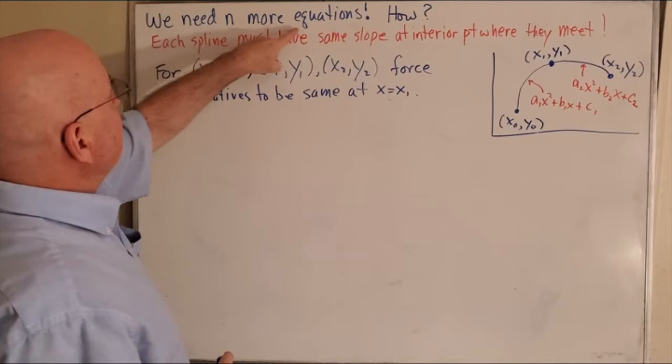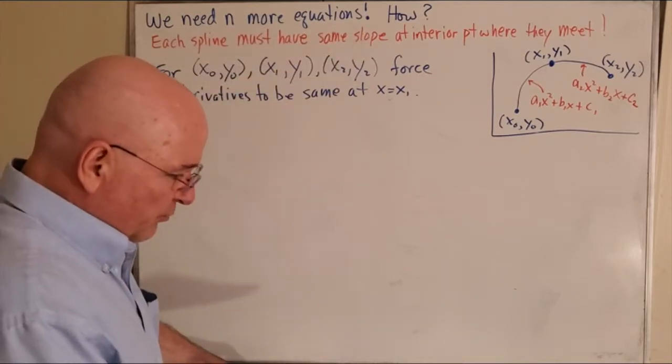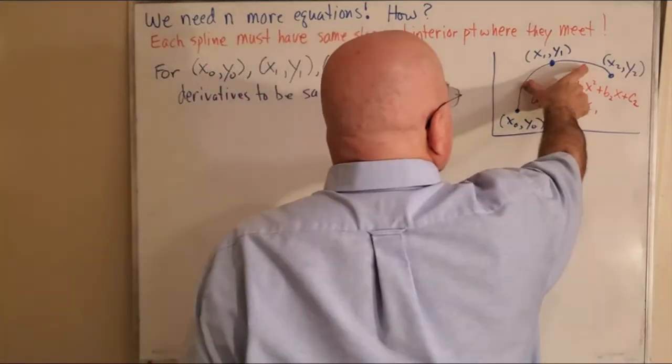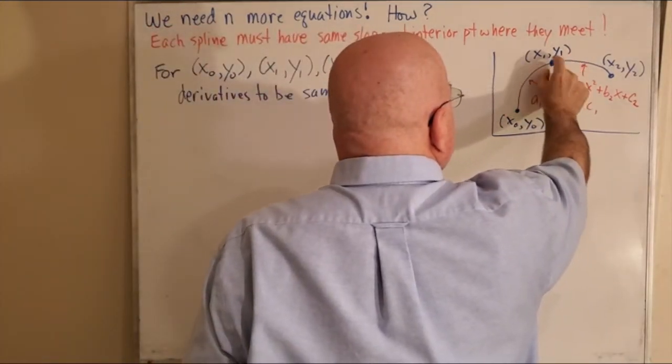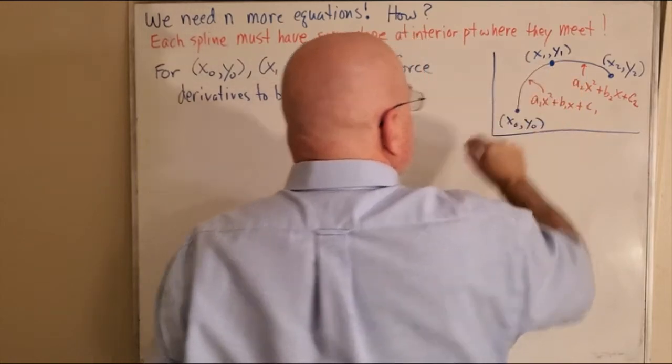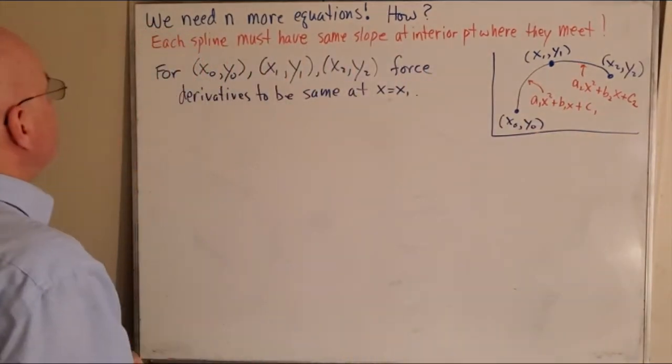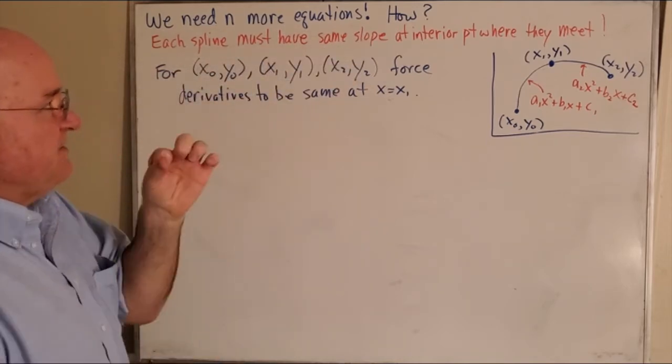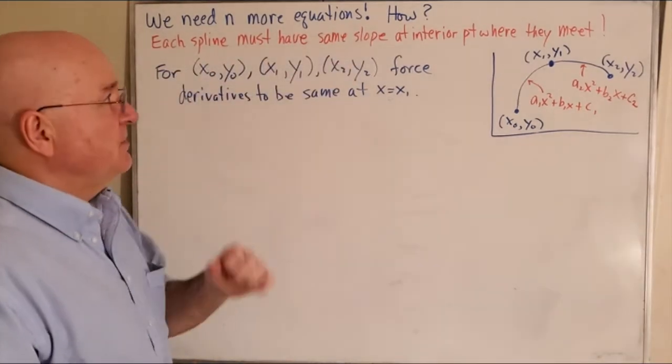We need n more equations. How are we going to get that? Well, remember that the derivatives have to be the same on both of these functions when you come to this point right here. So each spline must have the same slope at the interior point or the knot where they meet.